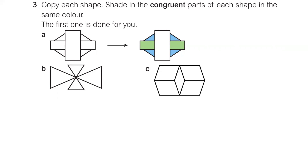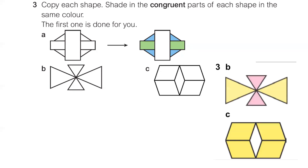So parts B and C — pause the video and give that a go. With B you should have got the two side triangles as the same colour and the top and bottom triangles as the same colour. Then for C, even though they're all in different rotations and reflections of each other, these four parallelograms are congruent — they are the same size, same shape, even though some have been flipped they still form the same shape if you put them all the same way around.